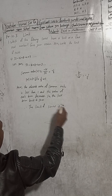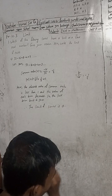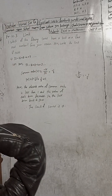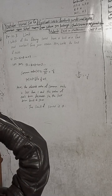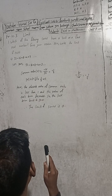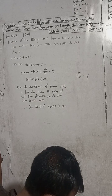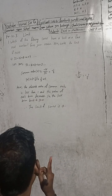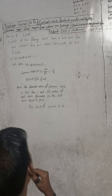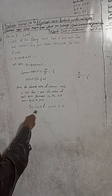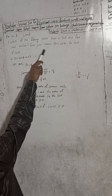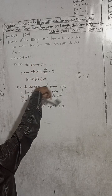Therefore, the limit of this series exists and the limit is zero. This is the solution — this is the limit of the sequence.